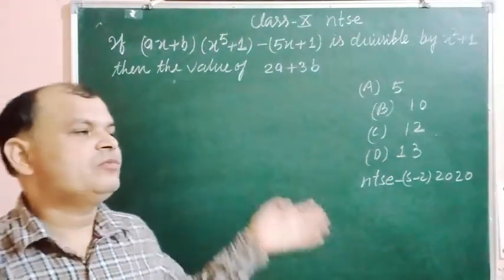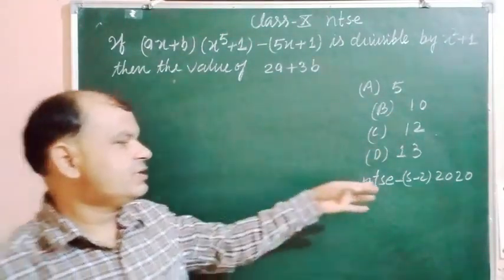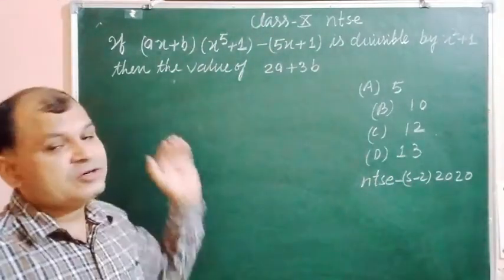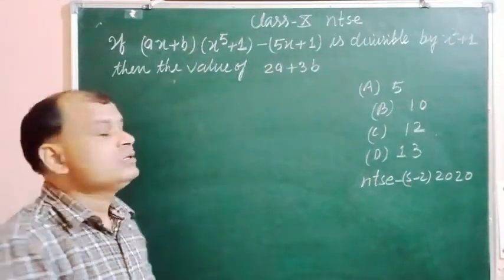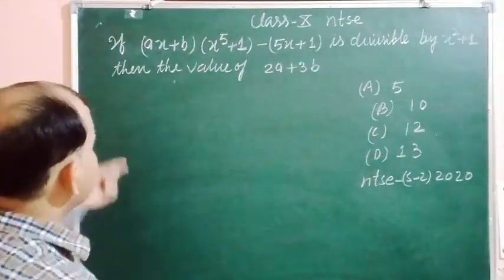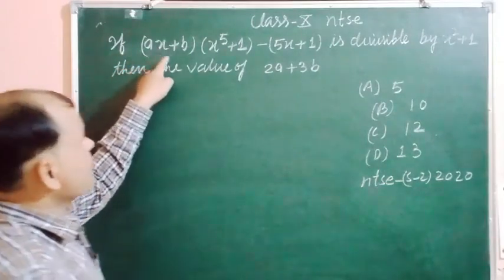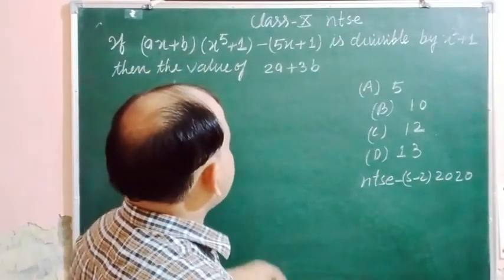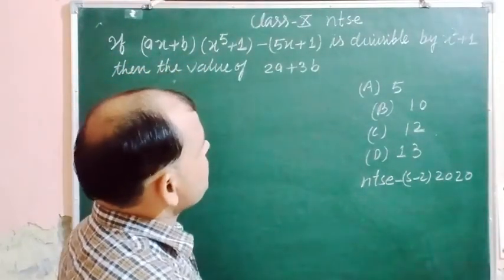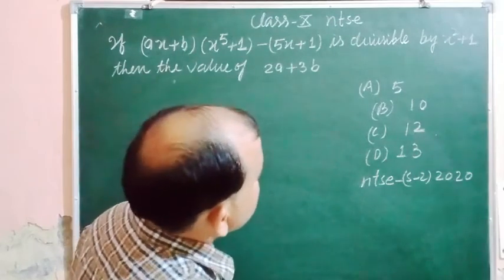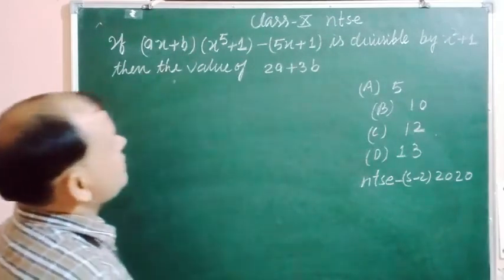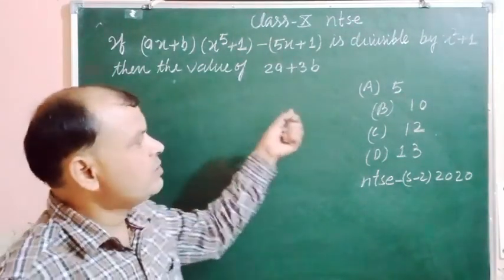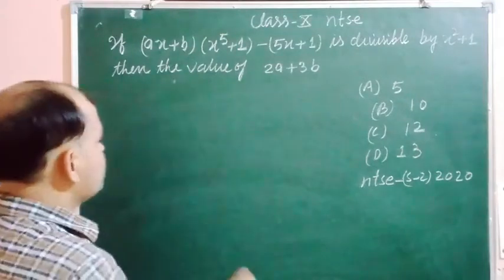Here is a student question from NTSC Second Stage 2022, related to polynomials. The question is: given that (AX + B)(X⁵ + 1) minus (5X + 1) is divisible by X⁵ + 1, find the value of 2A + 3B.